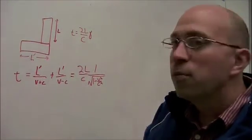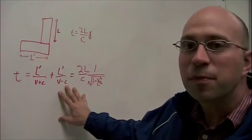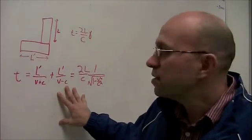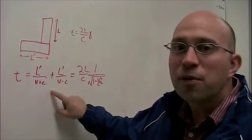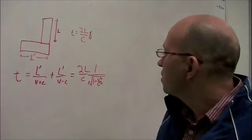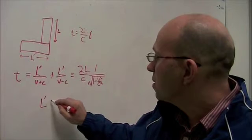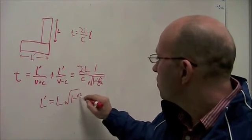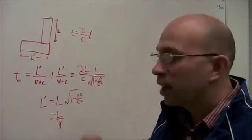And so I won't bore you with the details but you can just rearrange this. Multiply both sides of the equation by V plus C and by V minus C and then you'll get something that looks like 2L prime on the left and a little rearranging on the right and you'll end up with an equation that looks like L prime equals L times square root of 1 minus V squared over C squared. And we can also write that as L over gamma.